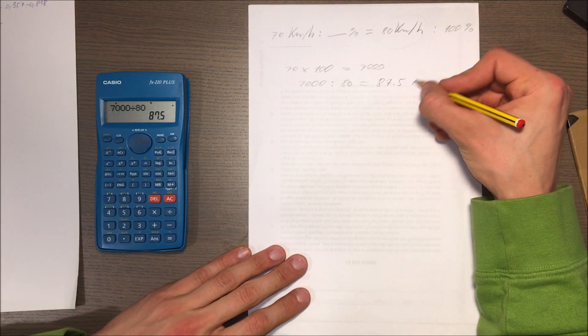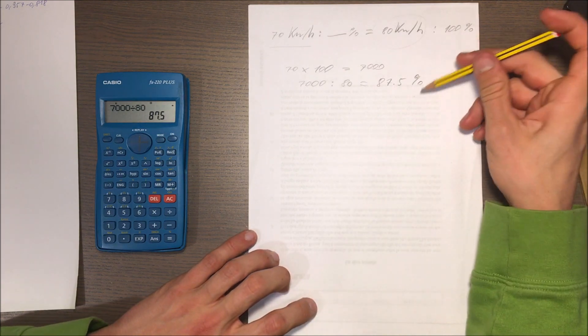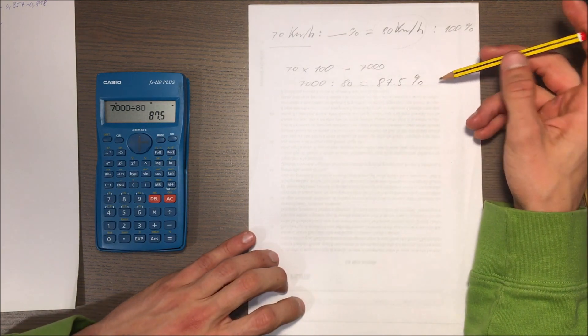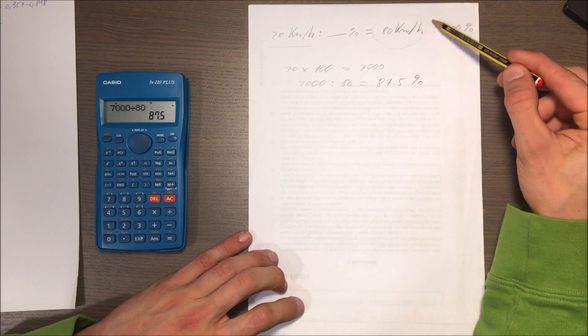87.5 percent. This means we have to consider the 87.5 percent of the speed we read on the speedo.